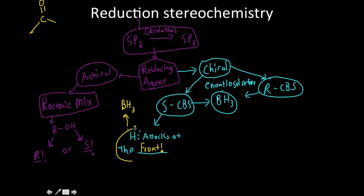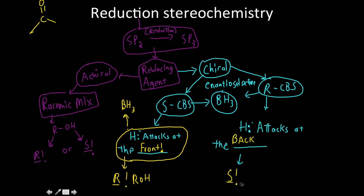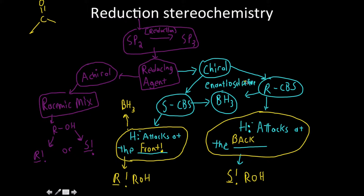So what are the consequences of this? If your hydride is attacking at the front, this is going to give you the R alcohol enantiomer. So this is kind of counterintuitive — SCBS gives us the R alcohol. And in RCBS, the hydride nucleophile is going to attack at the back, giving us the S configuration for our alcohol, which is again counterintuitive. But it's nice that you can remember it's always going to be in reverse.